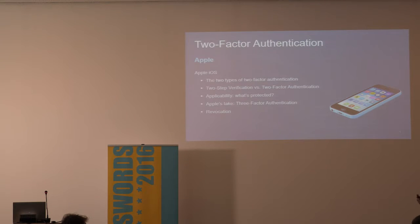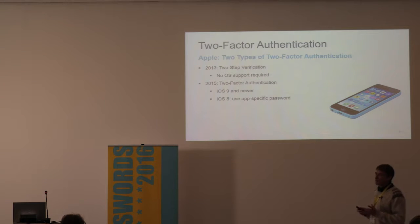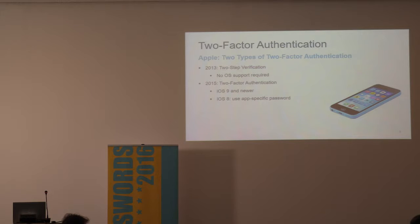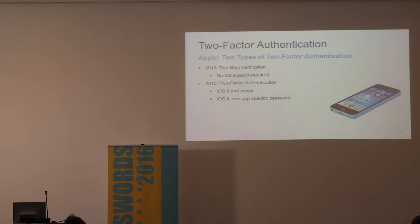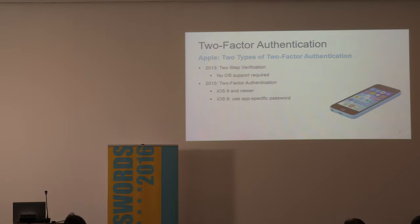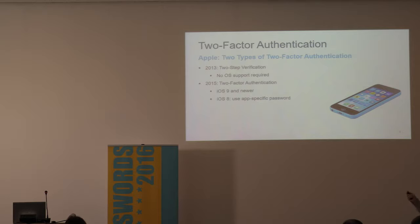There are two distinctly different types of two-factor authentication with Apple. The first type is called two-step verification. It appeared initially in 2013, long before iOS 9 was introduced. In early 2014, there was a major breach — the so-called CelebGate — where more than 500 celebrities were robbed of their iCloud photos. Later that year, Apple increased the security of two-step verification and started working on a different scheme they named two-factor authentication.